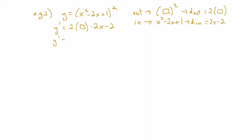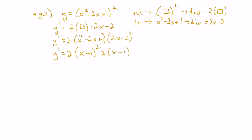Substituting the box back in with x squared minus 2x plus 1, our derivative is 2 times x squared minus 2x plus 1 times 2x minus 2. We can simplify by factoring: x squared minus 2x plus 1 factors as x minus 1 squared, and we can factor out a 2 from 2x minus 2 to get x minus 1. Multiplying the 2's together gives 4, and combining the factors, we get 4 times x minus 1 cubed.